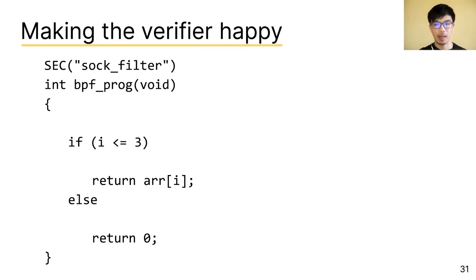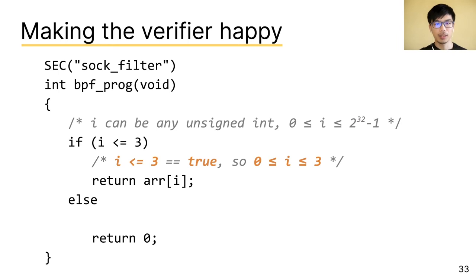To make the verifier happy, we can use an if statement to trim down the possible values of i. Here's how that works. At first, the verifier still thinks that i can be any value between 0 and 2 to the 32 minus 1.